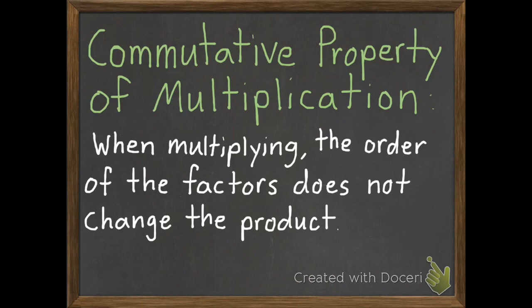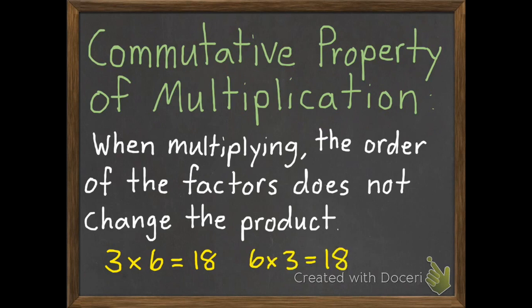For example, if we have 3 times 6 equals 18, we can change the order of the factors to 6 times 3, and it will not change the product. 6 times 3 is still 18.